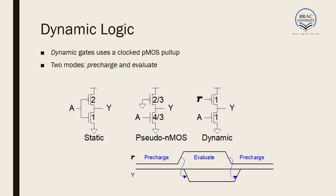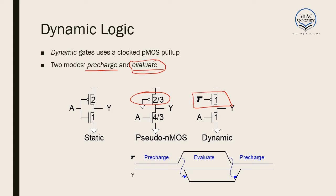Another logic is dynamic logic. Dynamic logic uses a clocked PMOS pull-up. In pseudo-NMOS logic, PMOS is always on, but in dynamic logic, PMOS is clocked — that is, PMOS is repeatedly switched on and off. Because of the two states of PMOS, there are two modes: pre-charge and evaluate mode. The circuit operates only in the evaluate mode. In the pre-charge mode, the clock is zero, so the PMOS is on and the output capacitance gets charged.